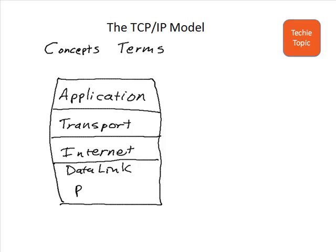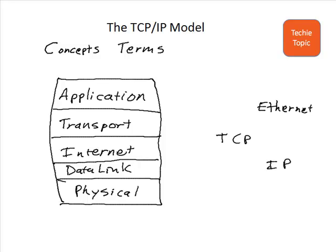Anytime you think about a protocol that's part of TCP/IP, you should be able to categorize it into one of these four or five categories based on the functions it provides. For instance, here are a couple of key standards and protocols you may have already seen before starting your study for CCNA: there's Ethernet, which we've all heard of and probably use every day; TCP and IP, the two protocols that make up the name TCP/IP; T1, a WAN term; PPP, point-to-point protocol; and finally the familiar HTTP, an application layer protocol.